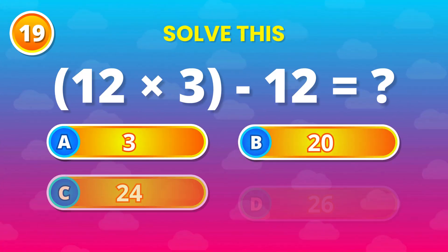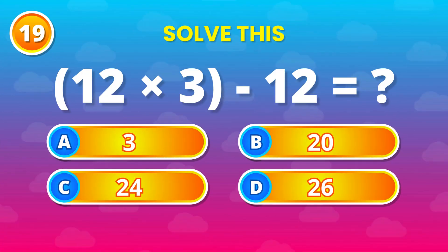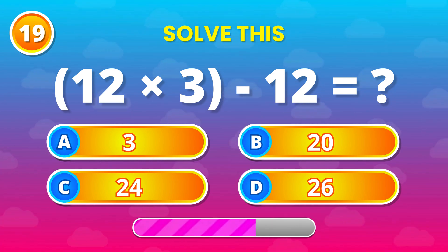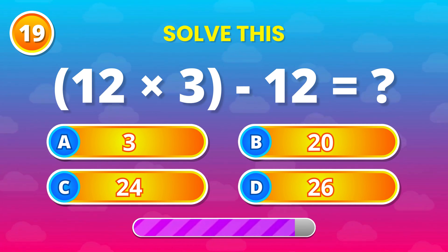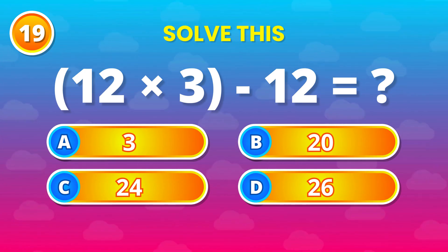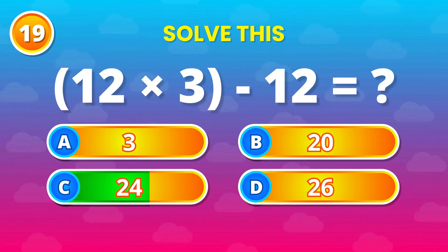What is (12 multiplied by 3) minus 12? The answer is 24.